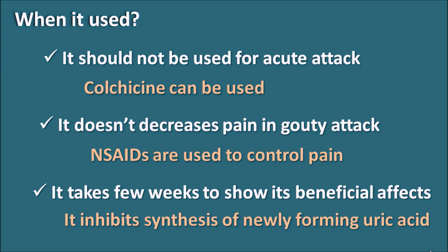In summary, allopurinol is a drug that controls uric acid levels and should be used for chronic gouty arthritis. It takes some time to produce beneficial effects. It is given initially at 100 mg and the dose can be increased to 300 mg or above, but above 300 mg the dose should be divided to decrease gastrointestinal side effects. Skin rashes are another side effect that should be checked thoroughly before administration.